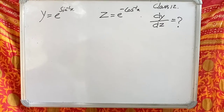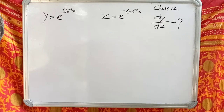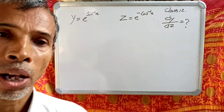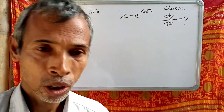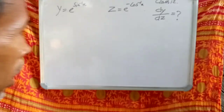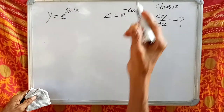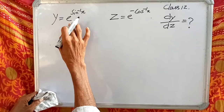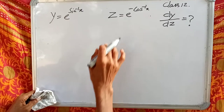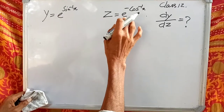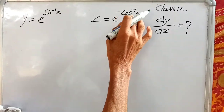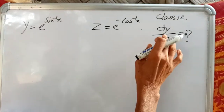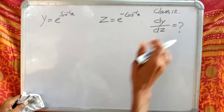Namaskar from my channel, Derivative Class 12. Given: y equal to e to the power sin inverse x, and z equal to e to the power minus cos inverse x. Find dy by dz.